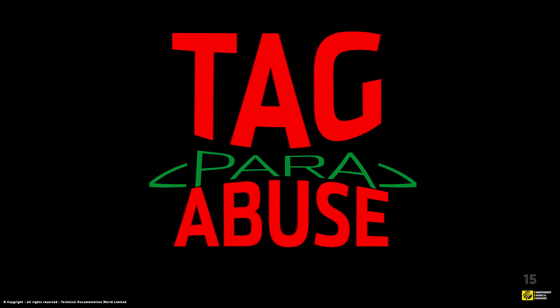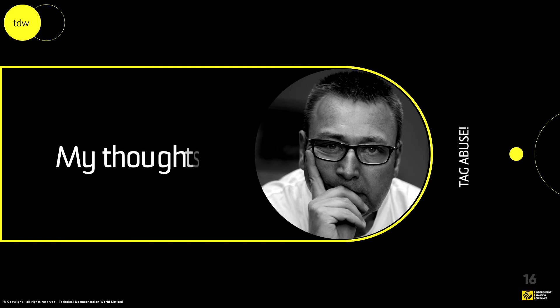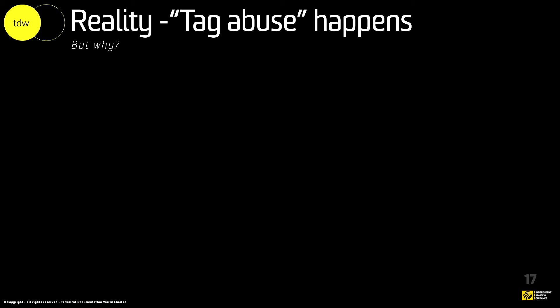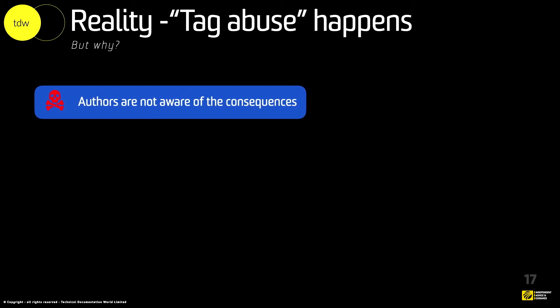Finally, for this section, I want to share my thoughts. The reality is that tag abuse happens, and it happens for a multitude of reasons. I've seen it and I continue to see it in customers' data. It's because the author is still thinking in two different areas, and because authors are not aware of the consequences of getting the structure wrong. It might seem kind of benign to put in an empty paragraph, but it does come down to a lack of knowledge of how it affects everything down the chain.